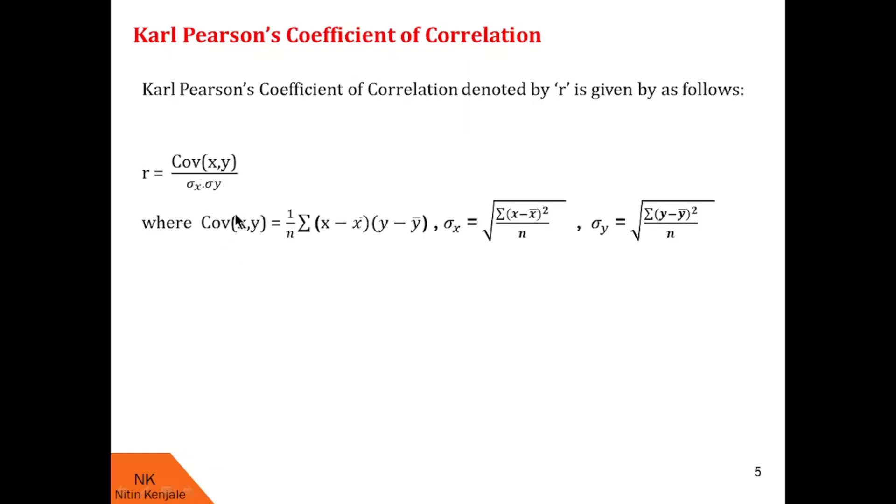Where covariance of X and Y has formula 1 by N into summation X minus X bar into Y minus Y bar, where X bar and Y bar denotes average of values of X and Y respectively, where N is the number of values. And sigma X is given by square root of summation X minus X bar square upon N and sigma Y is given by square root of summation Y minus Y bar square upon N.